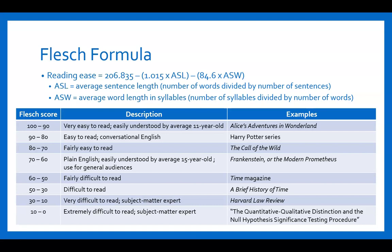A score of 70 to 60 is considered plain English, easily understood by the average 15-year-old. If you are targeting a general audience, this is the level you'd want to be at to make sure at least 50% of your readers can comprehend what you're writing. An example would be Frankenstein, or the Modern Prometheus. A score of 60 to 50 is fairly difficult to read, such as articles from Time magazine. 50 to 30 is difficult to read — an example is A Brief History of Time, a physics book.